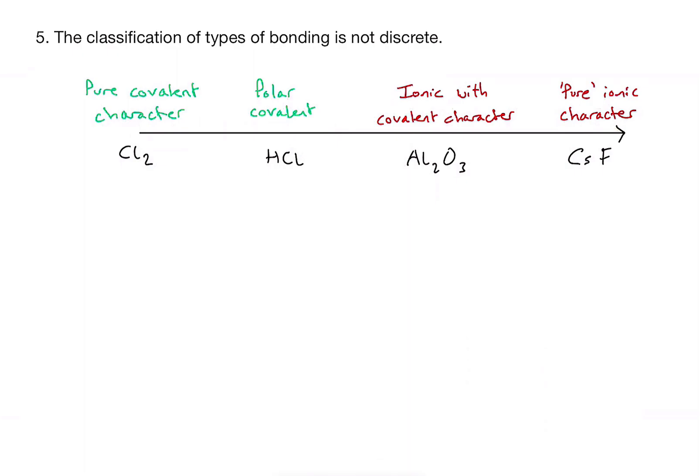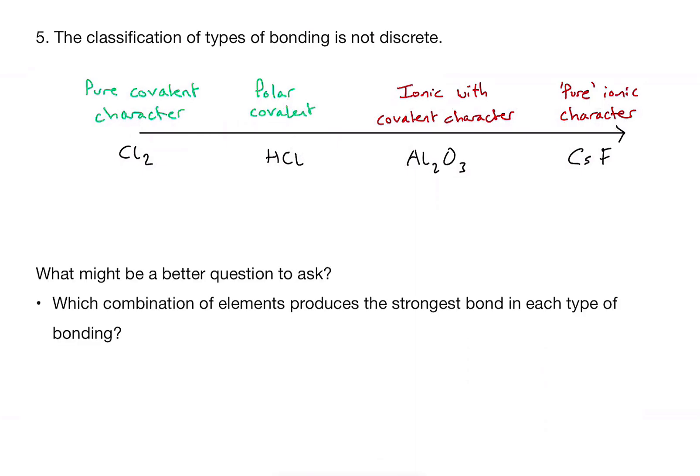So in summary, probably in response to the original question, we might think about a better question to ask and something that'd be much more appropriate might be something like this. Which combination of elements produces the strongest bonds in each type of bonding? So we're much more interested in comparing within each classification of bonding than we are comparing all three together. So in short, I haven't really answered the question. It's effectively impossible to answer in any valid sense. But hopefully this discussion has given you a bit of food for thought when thinking about why.